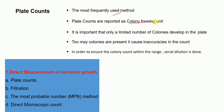It is important that only a limited number of colonies develop in a plate, because too many colonies can cause inaccuracies in the count. So in order to ensure the colony count is within the range, a serial dilution is done.